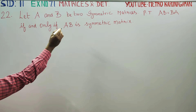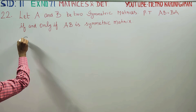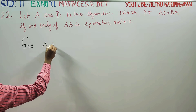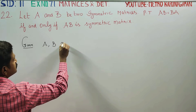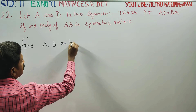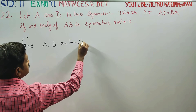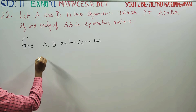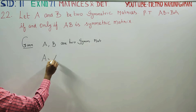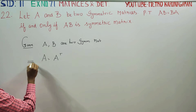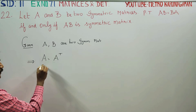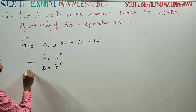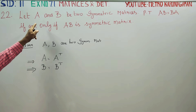Let A and B be two symmetric matrices. Given A and B are two symmetric matrices, their transposes are equal to themselves — that means A transpose equals A and B transpose equals B. This is the first stage information.